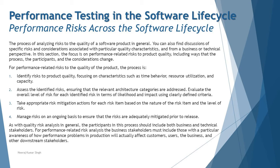Third, take appropriate risk mitigation actions for each risk item based on the nature and level of risk involved. Number four, manage risk on an ongoing basis to ensure risks are adequately mitigated prior to release. The risk management step is about confirming that what you mitigated earlier does not reappear, and that closing one mitigated risk does not cause another to surface.